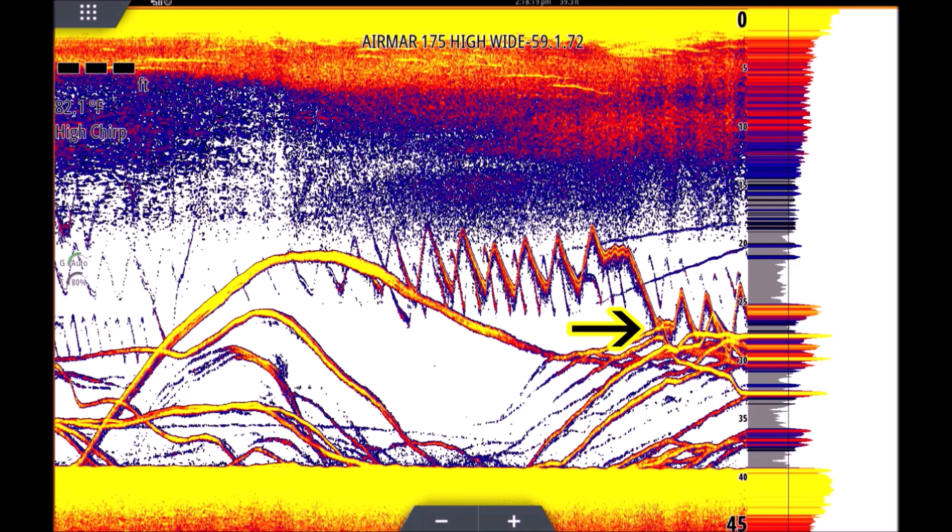see the jig moving down. Now if we just went by the A-scope here, it would be so hard to determine that's what was happening. But you can see how that history scrolls from right to left - it just paints such a beautiful picture and shows really what was happening.